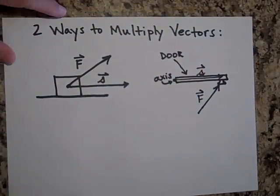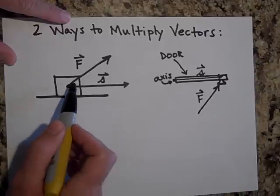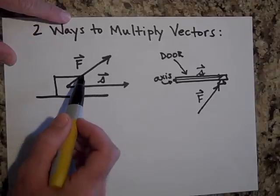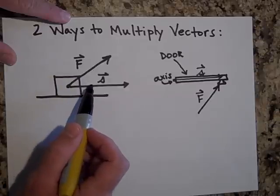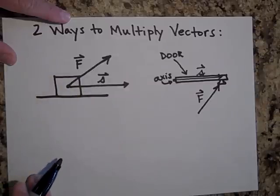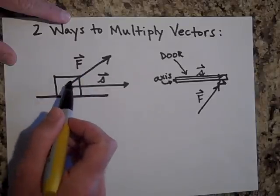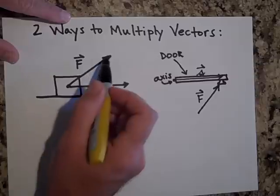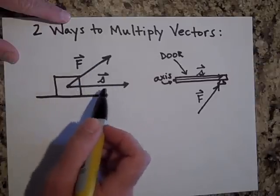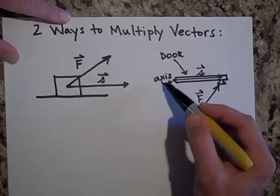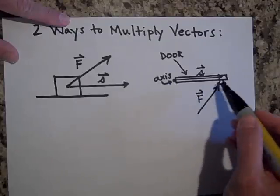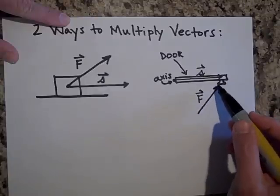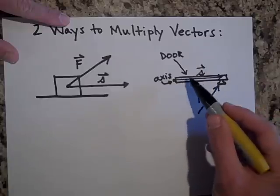The reason we have two ways to multiply vectors is that there are two different situations. Sometimes, the only part that matters is the component of one vector that's in the same direction as the other — like work, where only the component of force in the direction of displacement matters. Other times, like when opening a door, you're pushing on a doorknob with force at displacement s away from the axis of the door.